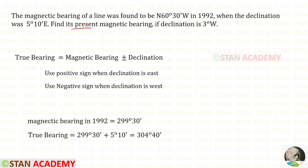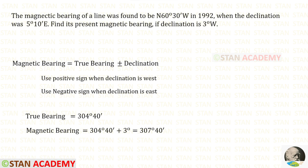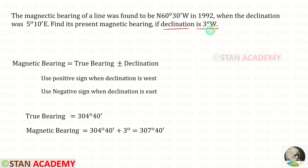The present declination is given as 3 degree west. We know that the magnetic bearing will change but the true bearing will never change. So using the true bearing we can find the present magnetic bearing. The formula to find the magnetic bearing is true bearing plus or minus declination. We have to use the positive sign when the declination is west, and the negative sign when the declination is east. Here the declination is west, so we have to use the positive sign. When we add these two we will get 307 degree 40 minutes.